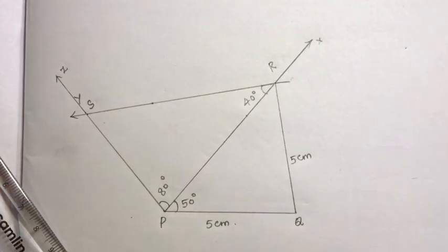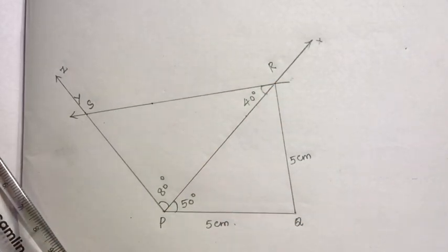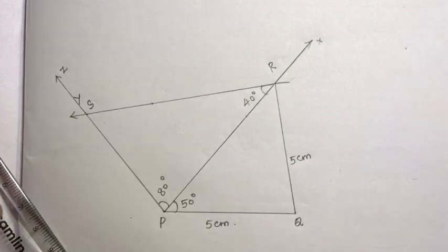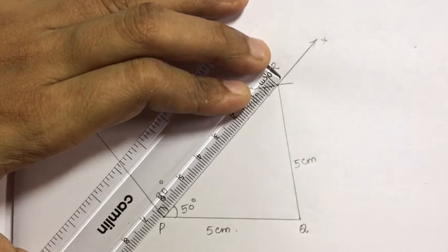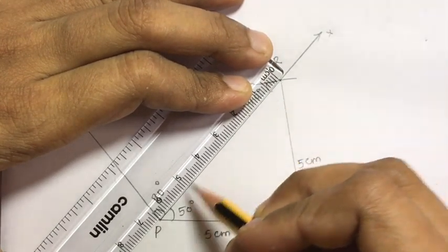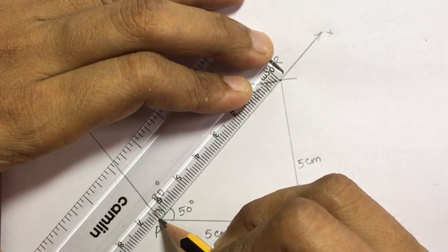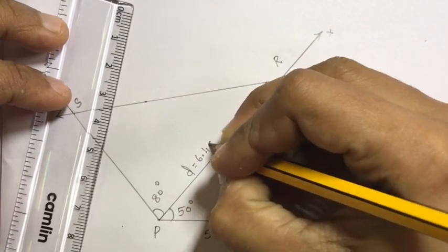Next, calculate the area using diagonal and perpendicular heights. Draw the diagonal and measure it. Using scale and set square, the diagonal d measures: 0... 6.1, 6.2, 6.3, 6.4. So d equals 6.4 cm.